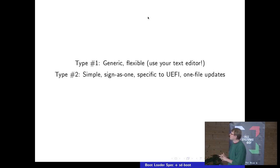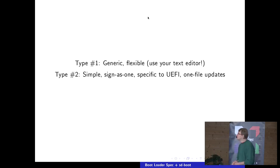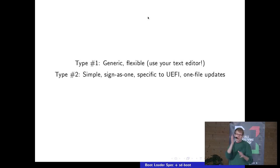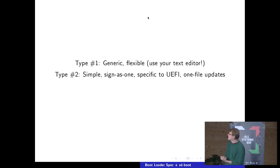What's also awesome about type 2 is that because it's a single file, we can do single-file updates. This is really nice for something as fragile as a bootloader — adding a new entry means dropping in one file, removing one means removing one file, renaming means renaming one file. You never have the risk that you update multiple things and something aborts in the middle, leaving you with a half-installed kernel and a missing initrd. Both types are equally supported and have their use cases.